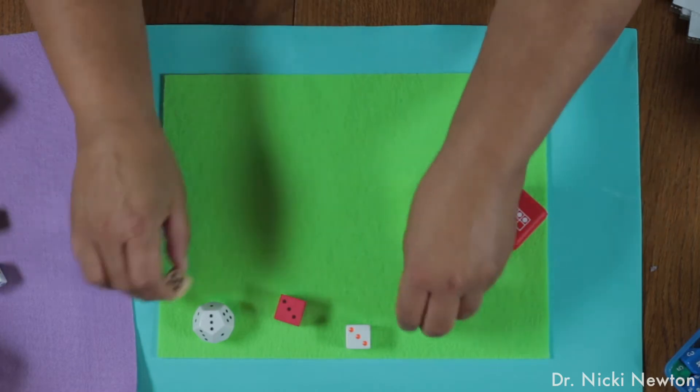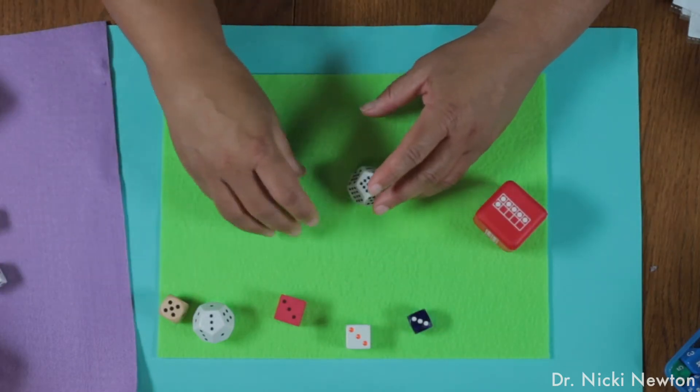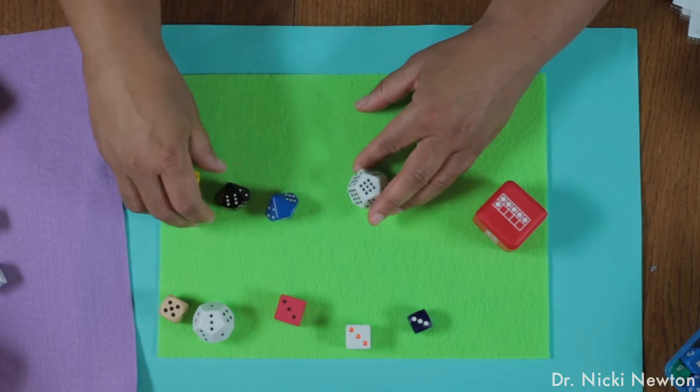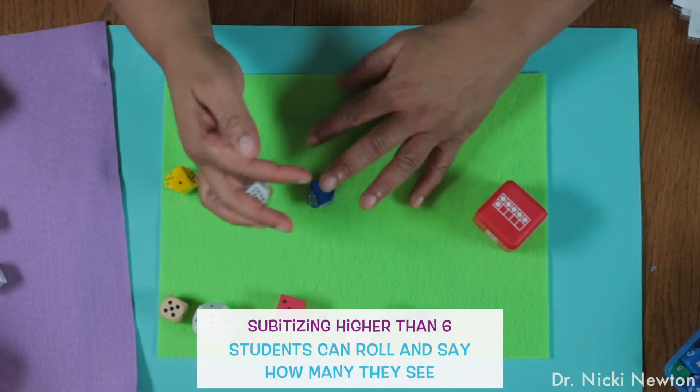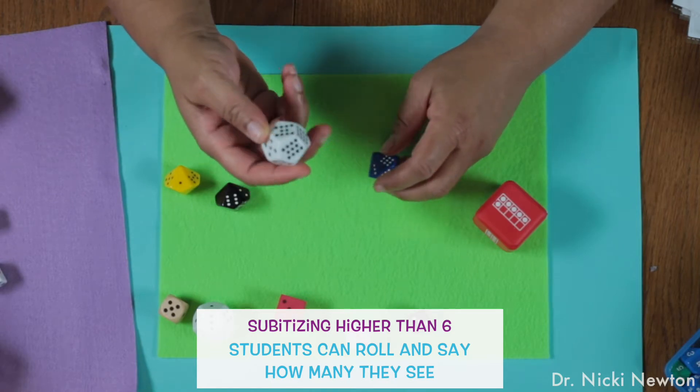Once they subitize within six, you're going to want them to subitize with larger numbers. Here are some dice that get them to subitize with larger numbers. They roll the dice and this one has subitizing within 12.